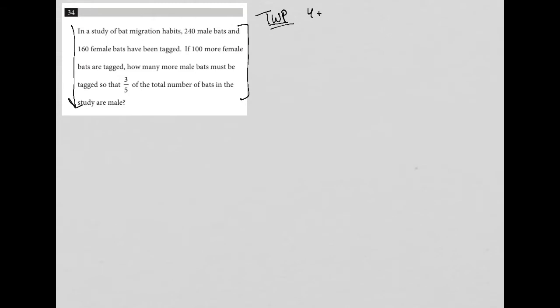So let's do that. In this question, it says, in a study of bat migration habits, 240 male bats, I'm going to just write that down, male, I have 240, and 160 female bats. So for female, this is exactly how I would answer this question if I were doing it on the real test. I just write that down. So there's my translation for the first sentence.